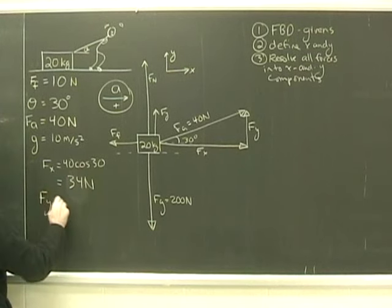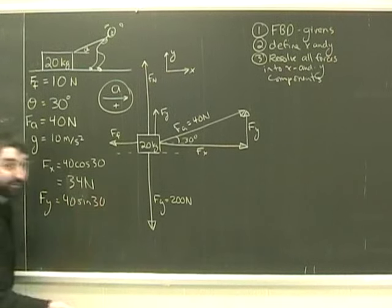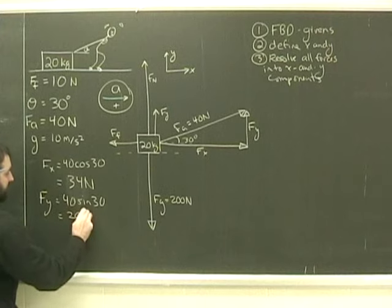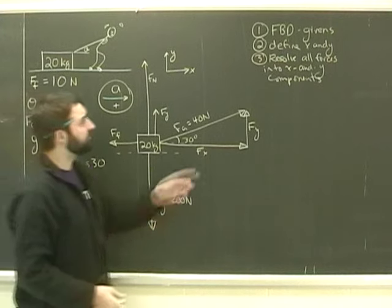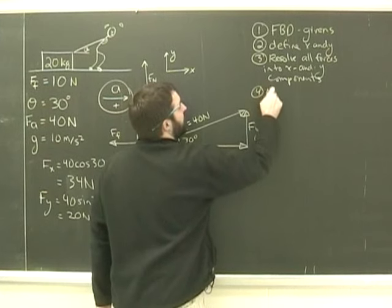So the x component is 34 newtons. Similarly, in the y direction, 40 sine 30. No need for a calculator here. That is simply going to be 20 newtons. And so I've resolved all my forces into x and y components.